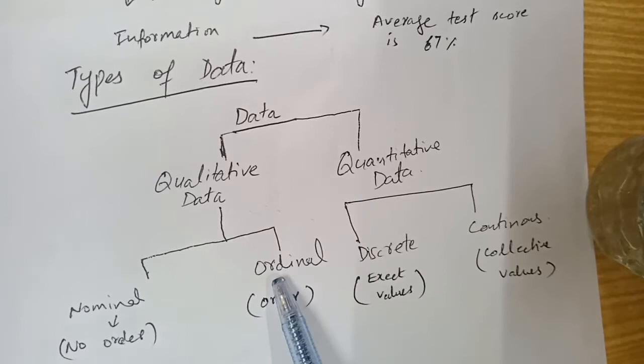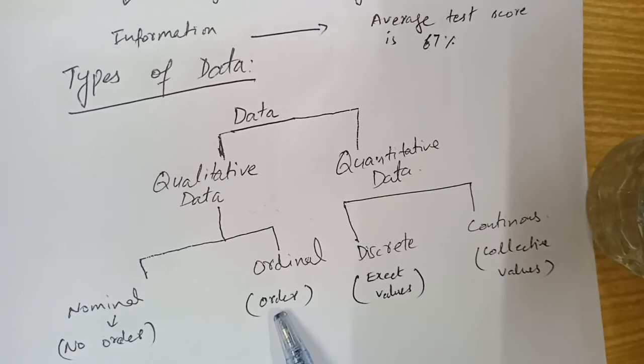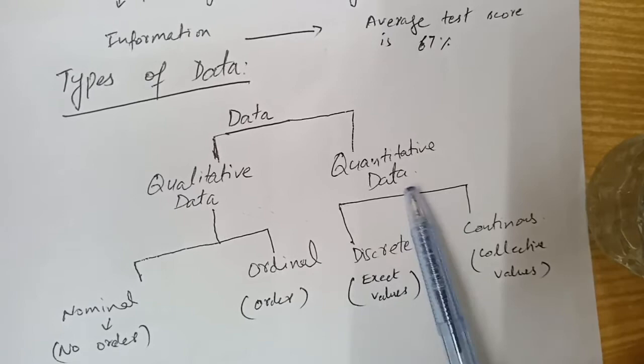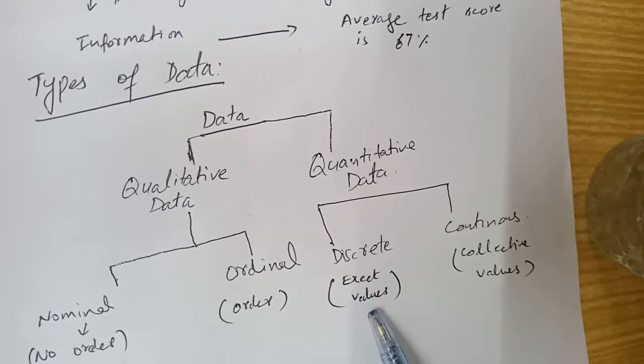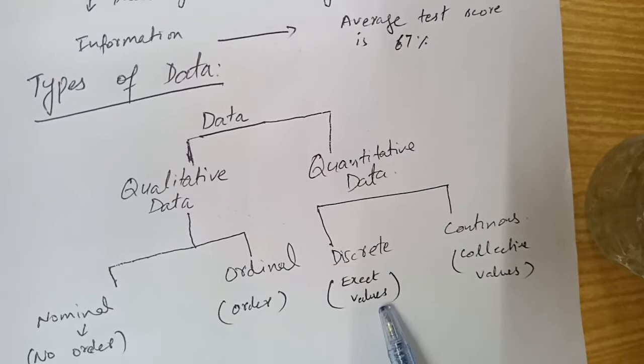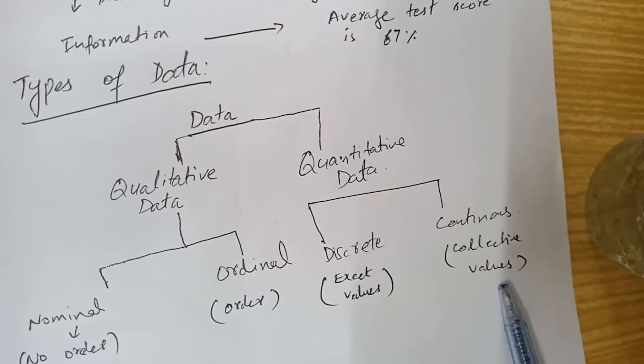Qualitative data has two sub-types: nominal data and ordinal data. Nominal data is qualitative data in which we don't care about the order of the data. Ordinal data is the data in which we care about the order of data. Quantitative data has two sub-types: discrete data and continuous data. In discrete data it consists of exact values, and continuous data deals with collective values.